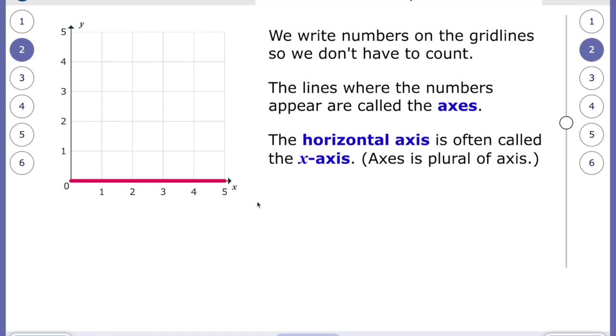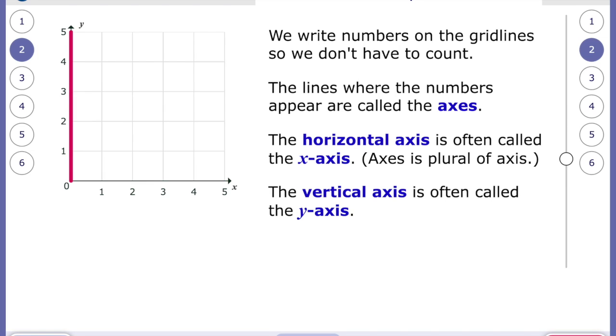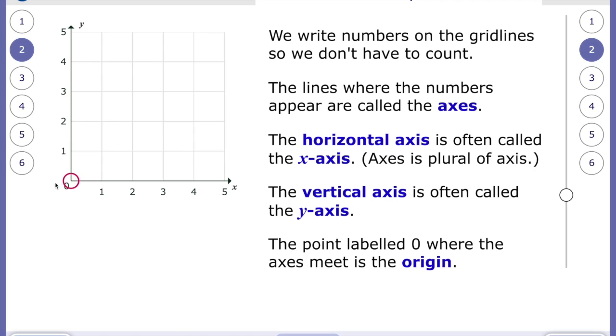The two pink things are called axes. And the horizontal axis, as we've said, is called the x-axis. And the vertical axis is often called the y-axis. And the zero point here where the two meet is called the origin.